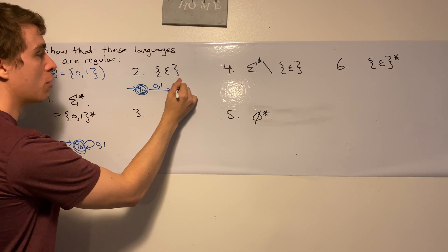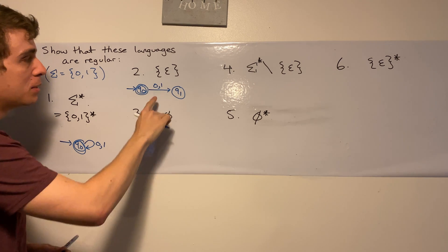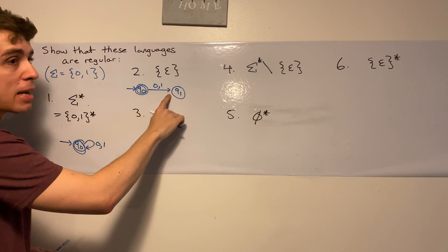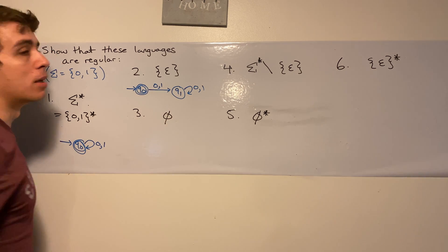I'm going to call that state q1. And once we're here, we should never accept because we've already read a character to get there. So we just stay there on zero and one.